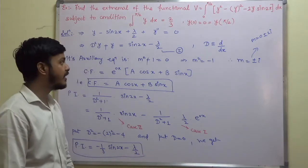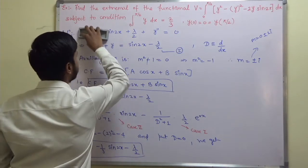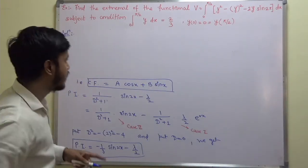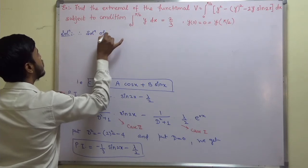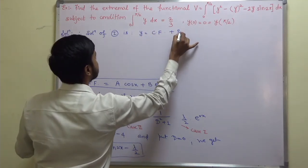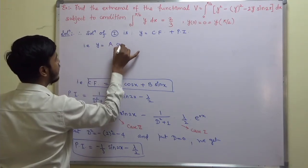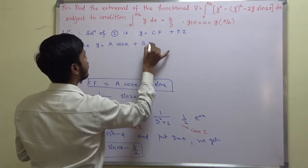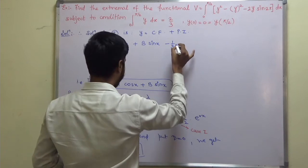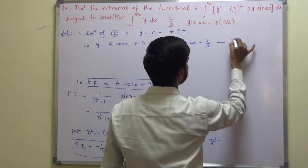After getting CF and PI, write the general solution of equation 1 as y = CF + PI. Therefore the solution is: y equals a cos x + b sin x − (1/3)sin(2x) − λ/2. Call this equation 2.